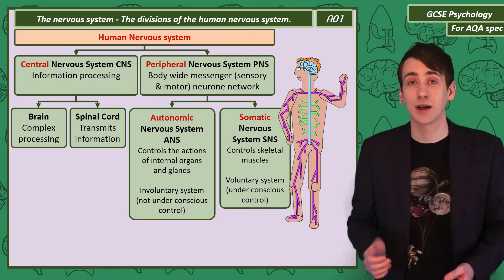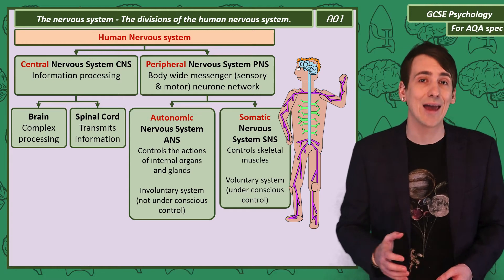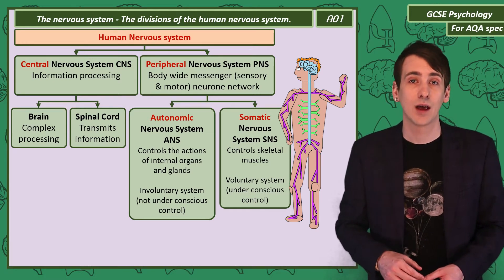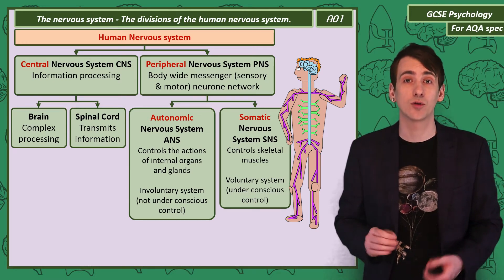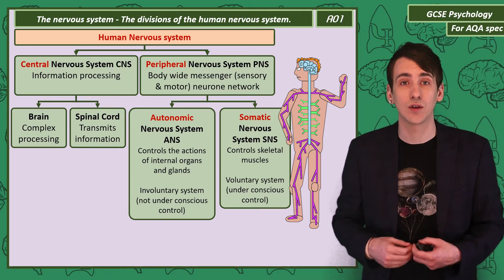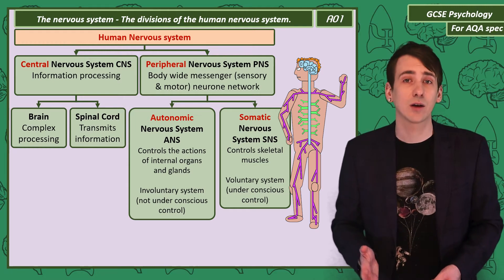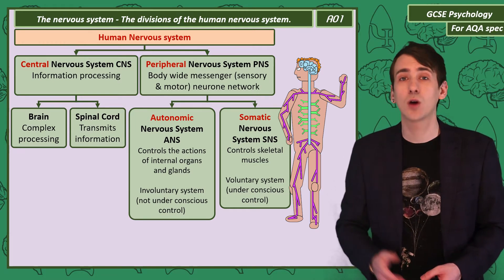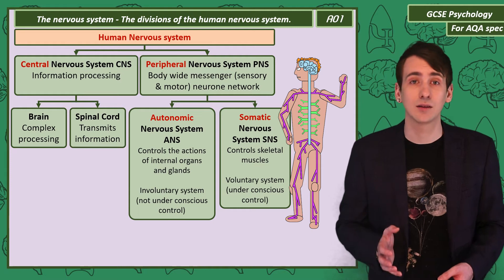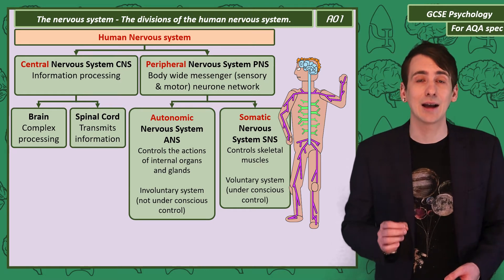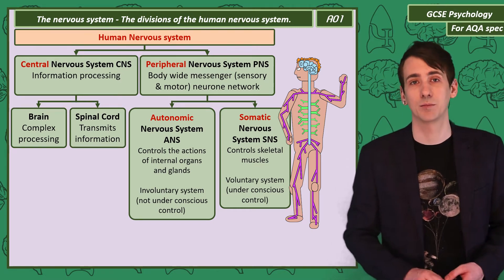What's not voluntary is the autonomic nervous system, or ANS. This is a network of nerves that controls your internal organs and glands — so things like releasing hormones. You can't consciously decide to do those things, so the ANS is an involuntary system.